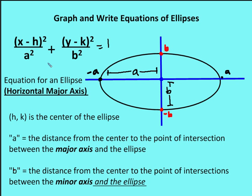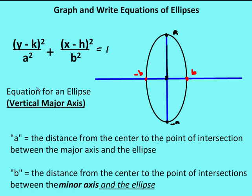The b value is the distance from the center to the co-vertices along the minor axis. That's the equation for the horizontal major axis ellipse. For the vertical major axis, we've swapped the x minus h and y minus k squared values. a squared still designates the distance from the center to the vertices, and b is still the distance from the center to the co-vertices.